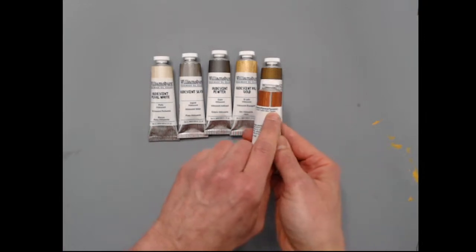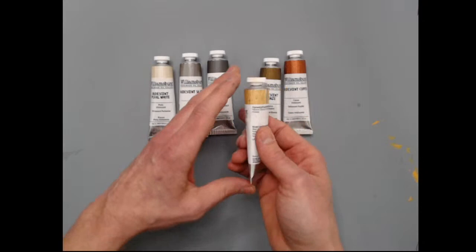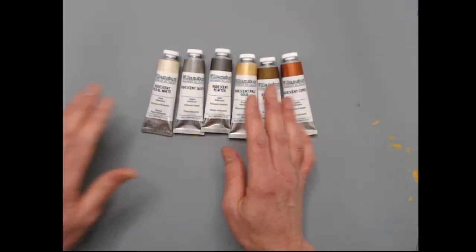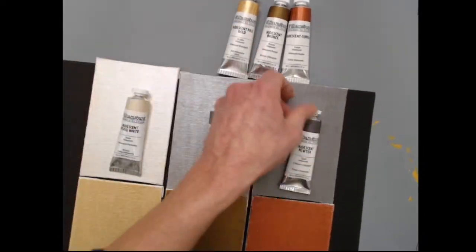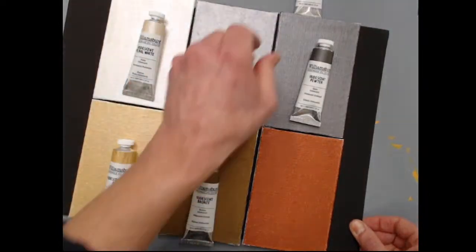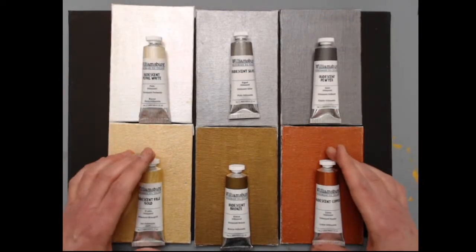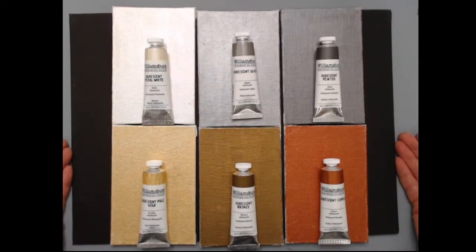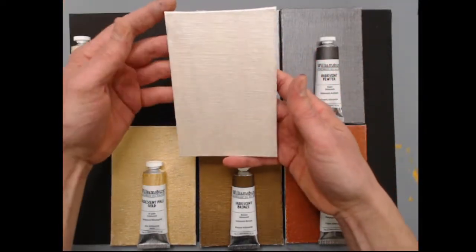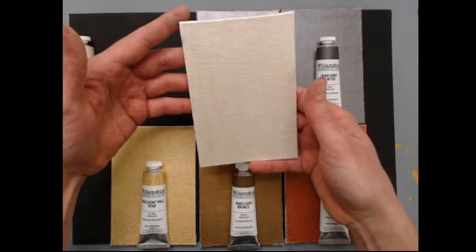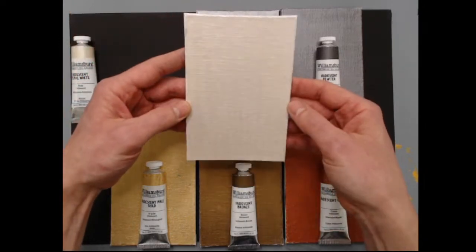I'm going to put these on each of these three by five canvas panels. These are just knifed out onto these panels and I'm just going to hold this up for you. It's all about the shimmer, right? These are like metallic paints without the metallic. You can see how they reflect and refract the light. They look really shimmery and brilliant.